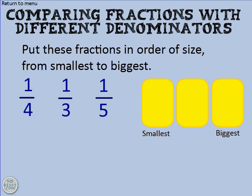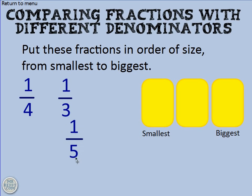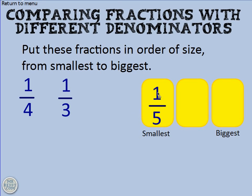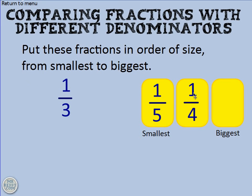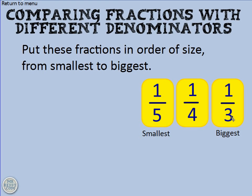That helps us with this example. One fifth has been cut into five pieces and we've got one of them selected, so it's going to be the smallest because it's been cut into more pieces than the other two fractions. One quarter is the middle fraction, cut into four pieces. And one third is the biggest of the three because it's only been cut into three pieces, so each individual third will be bigger.